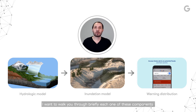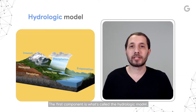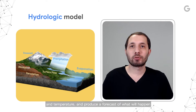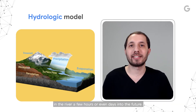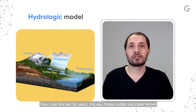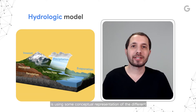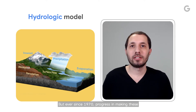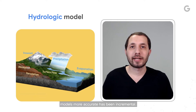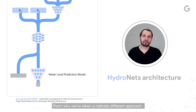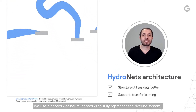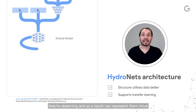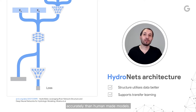Over the next few minutes, I want to walk you through briefly each one of these components. The first component is what's called the hydrologic model. These models take as inputs things like precipitation and temperature, and produce a forecast of what will happen in the river a few hours or even days into the future. Over the last 50 years, the way these models are implemented is using some conceptual representation of the different physical processes in the hydrologic cycle. But ever since 1970, progress in making these models more accurate has been incremental. That's why we've taken a radically different approach. We use a network of neural networks to fully represent the riverine system. Our models can directly learn the physical processes they're observing, and as a result, can represent them more accurately than human-made models.